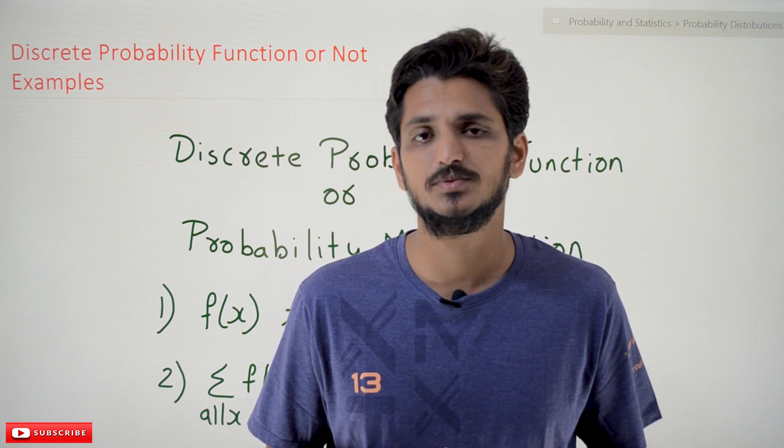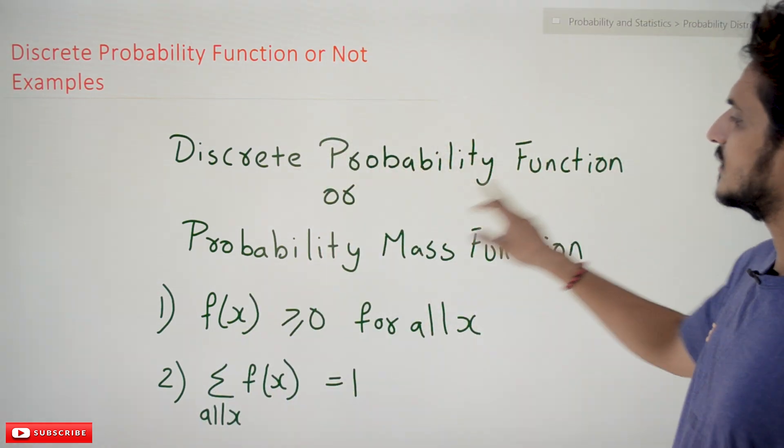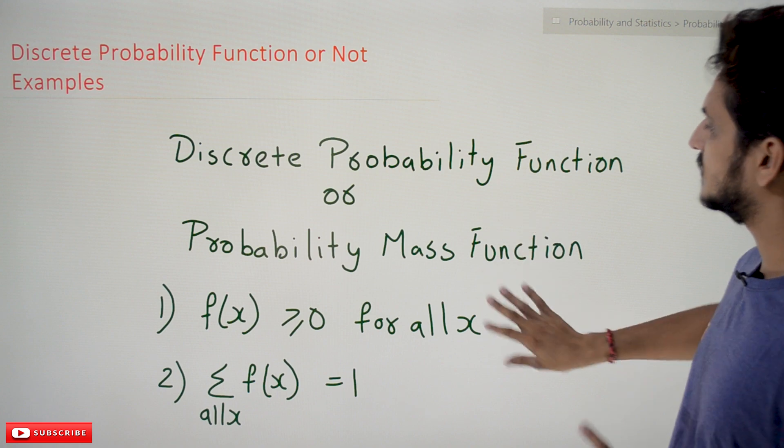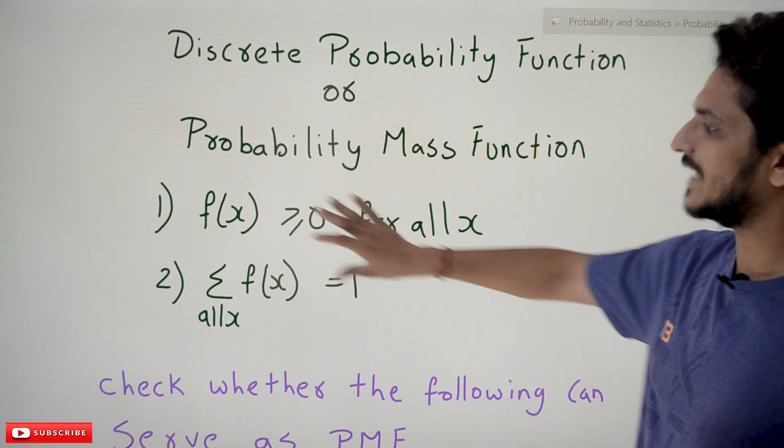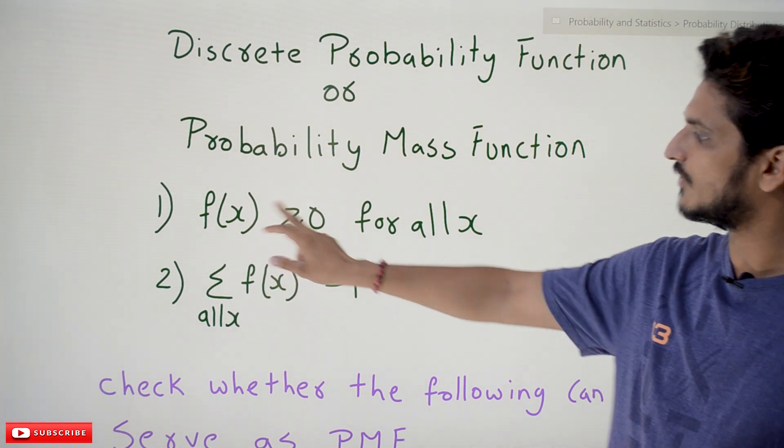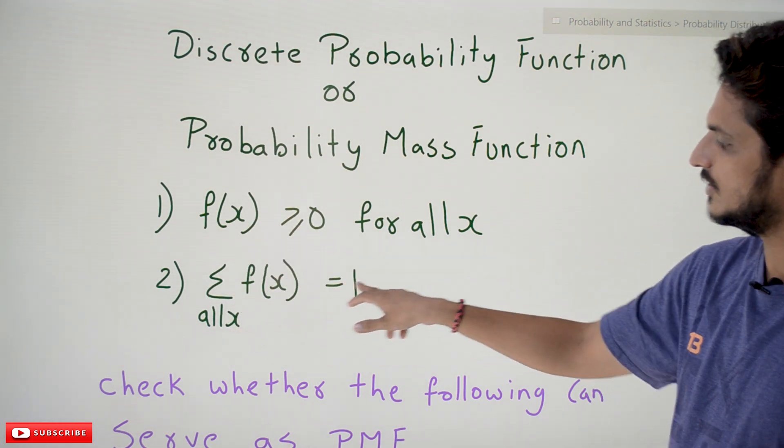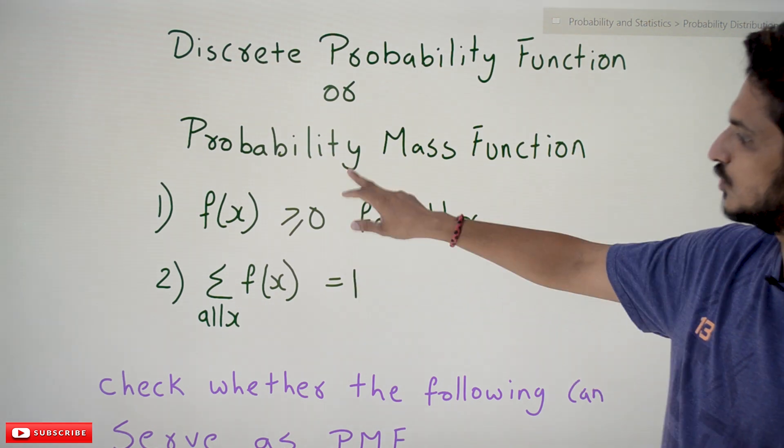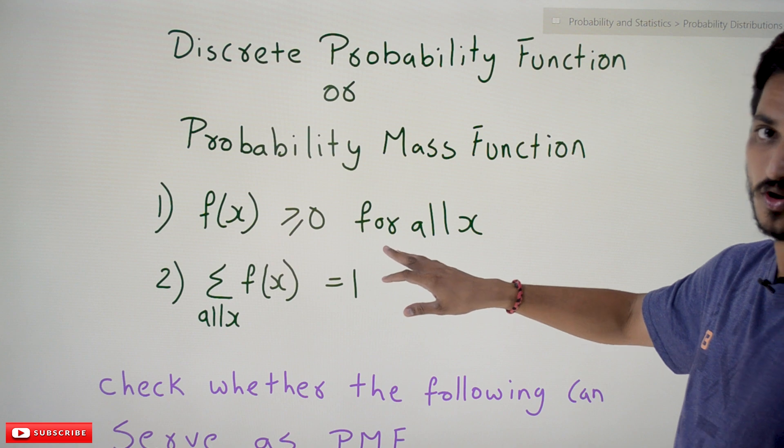Coming to today's class, discrete probability function, or we call it as probability mass function. If a function wants to be a probability mass function, it has to satisfy these two conditions: f(x) ≥ 0, and Σ all x f(x) = 1. These are the two conditions satisfied by our function. Why it has to follow that was explained in our previous class.